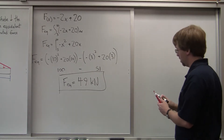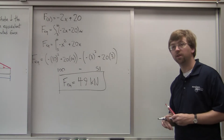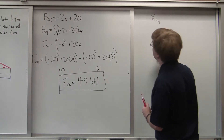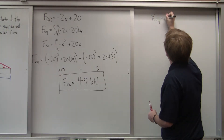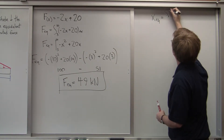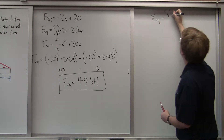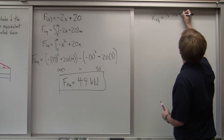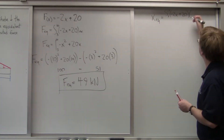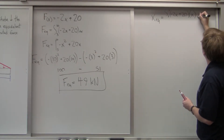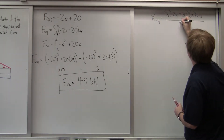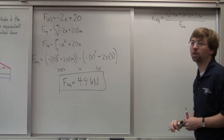Now let's find XEQ. For this we use the moment integral. XEQ, the position of the equivalent point load, equals the integral from 3 to 10 of our force function, negative 2X plus 20, multiplied by X, integrated with respect to X — and that whole integral is divided by FEQ, the magnitude we just found.